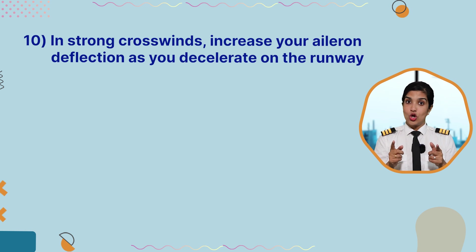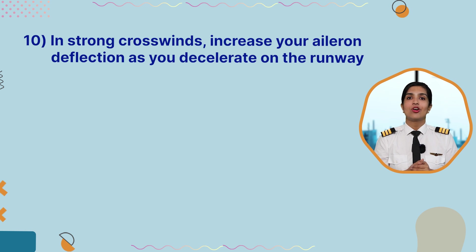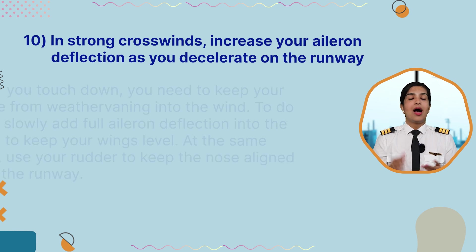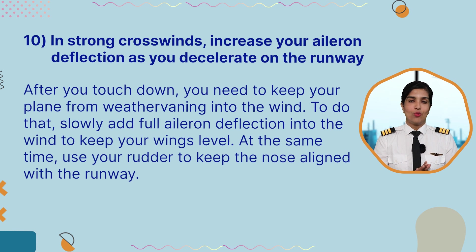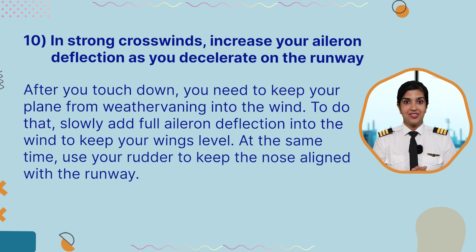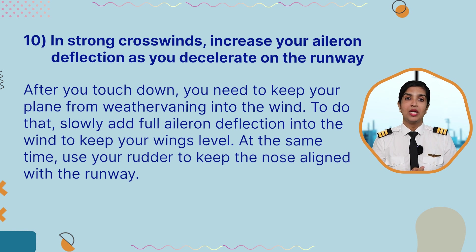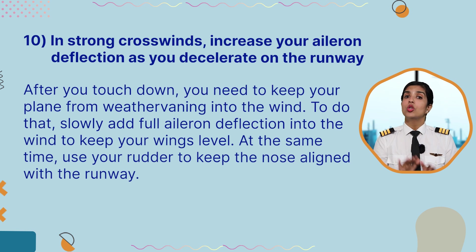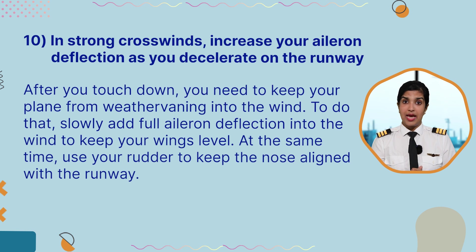Point number 10: in strong crosswinds, increase your aileron deflections as you decelerate on the runway. After you touch down, you need to keep your plane from weather-vaning into the wind. To do that, slowly add full aileron deflection into the wind to keep your wings level. At the same time, use your rudder to keep the nose aligned with the runway.